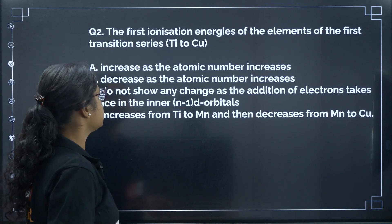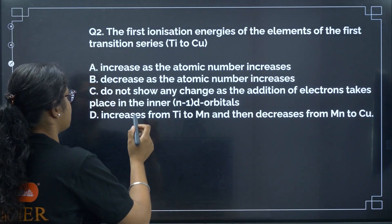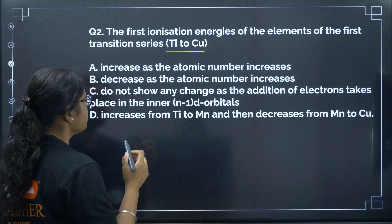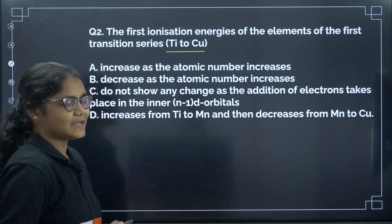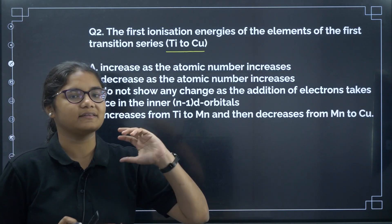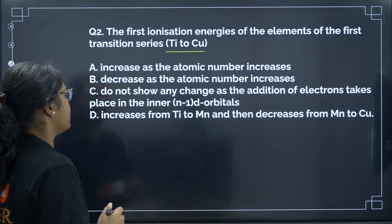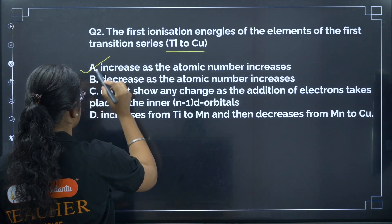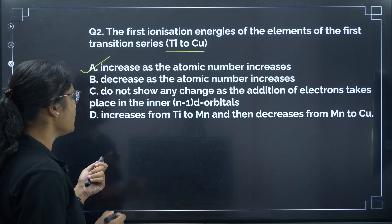Question 2: The first ionization energies of the elements of the first transition series — titanium to copper — increases as the atomic number increases. As we go along the period, the size keeps on decreasing and effective nuclear charge increases, that is why the ionization energy will increase. The correct answer is option A.